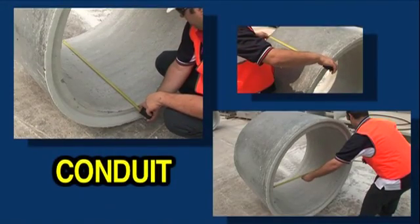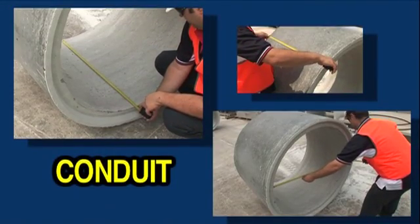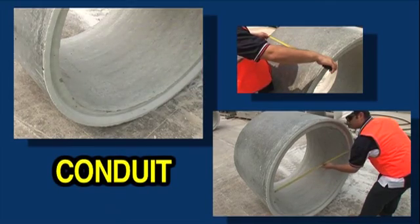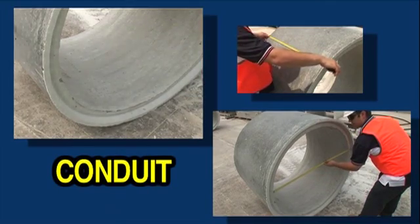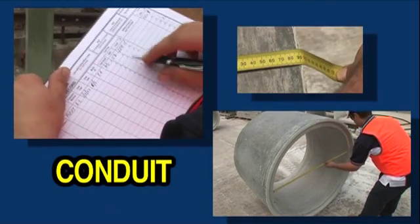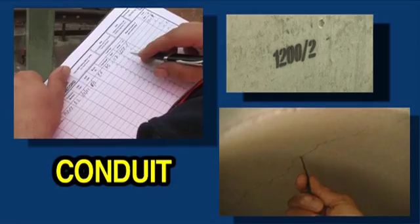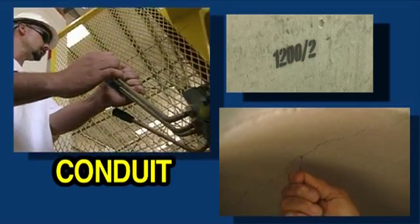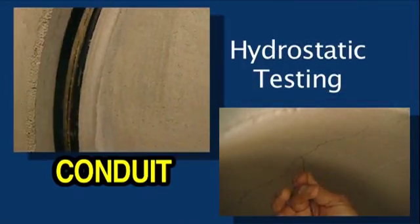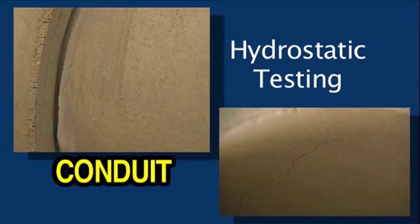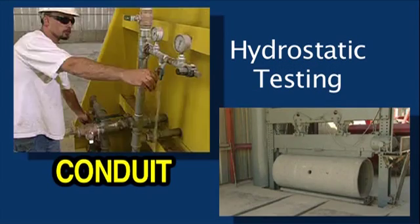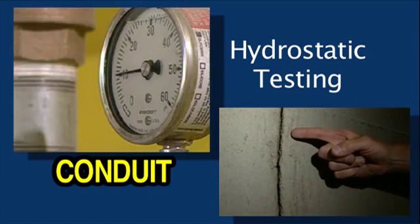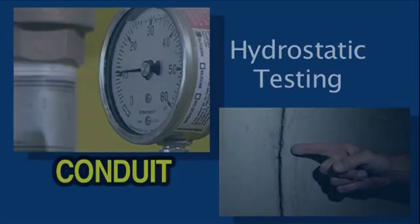The conduit criteria can be validated in several ways. The hydraulic capacity is ensured by routine diameter checking and joint adequacy, both proven by measurement. Hydrostatic testing may also be specified for water tightness verification. Pressure testing of pressure pipe is required for verification of the pressure rating.